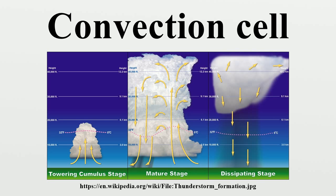Within the earth's troposphere, warm air has a lower density than cool air, so warm air rises within cooler air, similar to hot air balloons. Clouds form as relatively warmer air carrying moisture rises within cooler air. As the moist air rises, it cools, causing some of the water vapor in the rising packet of air to condense. When the moisture condenses, it releases energy known as the latent heat of fusion, which allows the rising packet of air to cool less than its surrounding air, continuing the cloud's ascension.